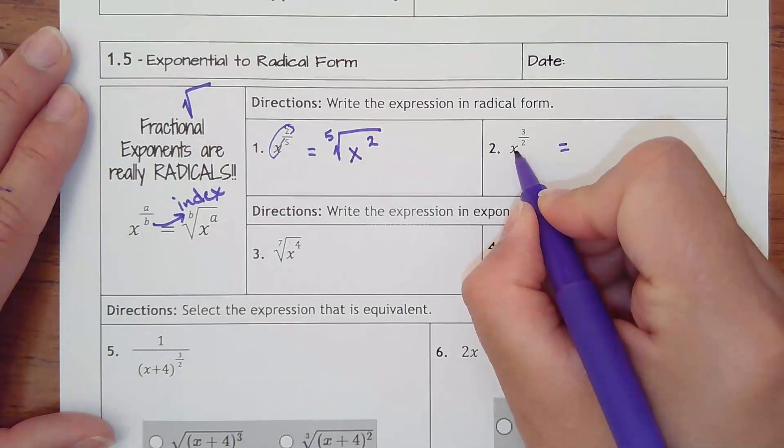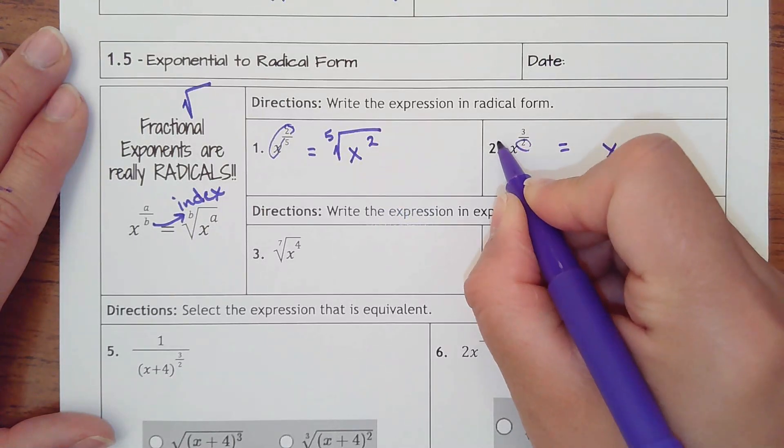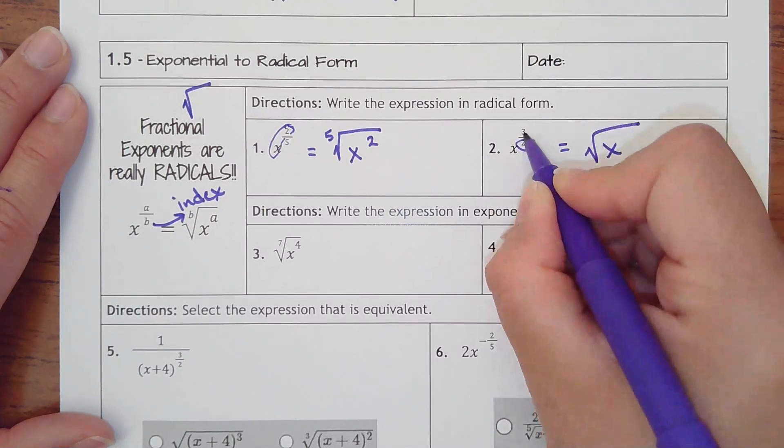Number two, if I had x to the three halves, that would be now a square root of x cubed.